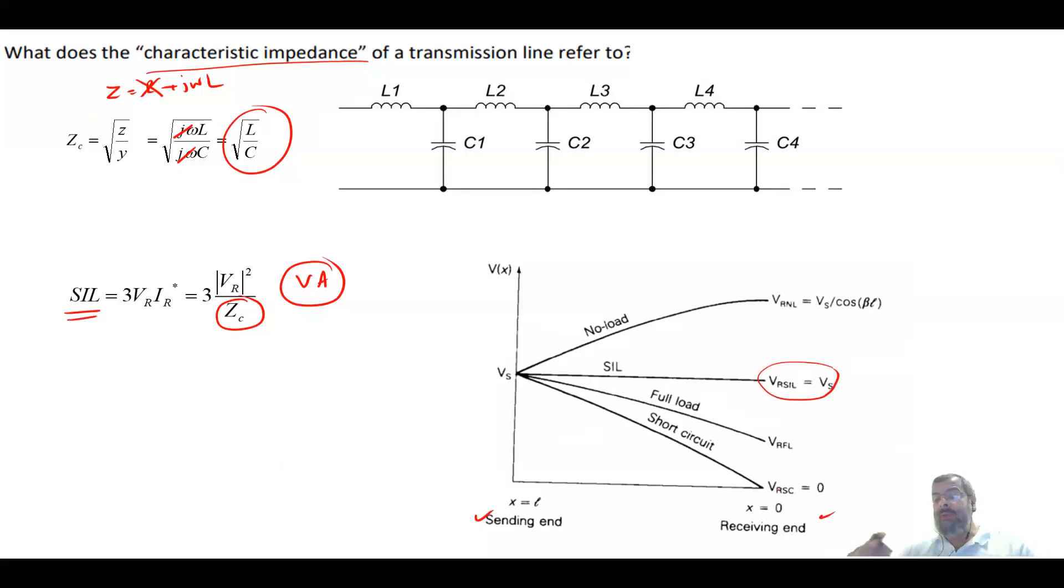If we have no load at all, then the voltage at the receiving end will be more than the sending end because now all this injected reactive power coming from the shunt capacitance will, when we inject reactive power you increase the voltage and there is no load at the other end, so there is nothing to absorb this injected reactive power so the voltage will increase.